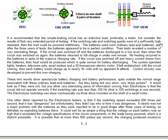If the circuit was switched off and heavy current drawn from the batteries, then heat would be generated, which is quite normal for battery discharging. The system operated lights, heaters, television sets, small motors, and a 30-horsepower electric motor. If left undisturbed with the circuit running, each battery would charge up to nearly 36 volts with no apparent ill effects. Control circuitry was developed to prevent this overcharging. These test results show spectacular battery charging and performance, quite outside the normal range associated with ordinary lead-acid batteries.